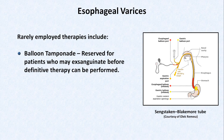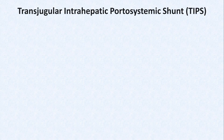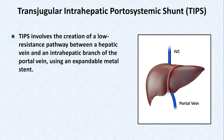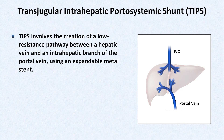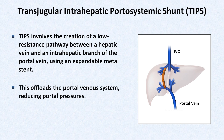One of the indications for these tubes is to buy time for a more dramatic, long-term solution. One is an emergent TIPS procedure. TIPS itself is not rare, but it's usually an elective procedure to treat refractory ascites, and is only rarely used as emergent management of a variceal bleed. TIPS stands for Transjugular Intrahepatic Portosystemic Shunt. It involves the creation of a low resistance pathway between a hepatic vein and an intrahepatic branch of the portal vein using an expandable metal stent. This offloads the portal venous system, reducing portal pressures.